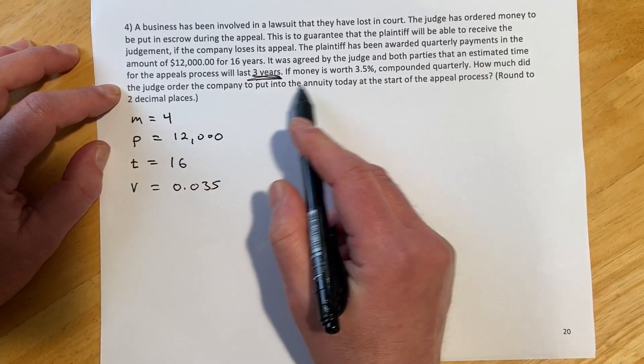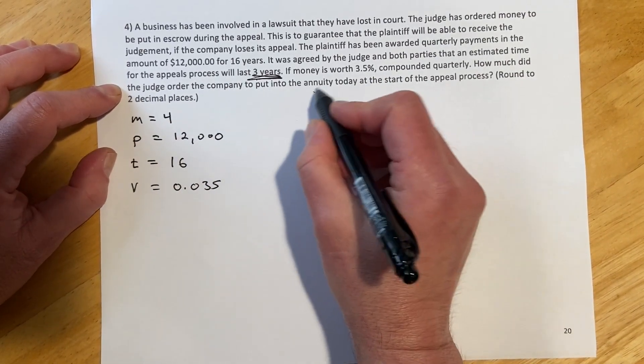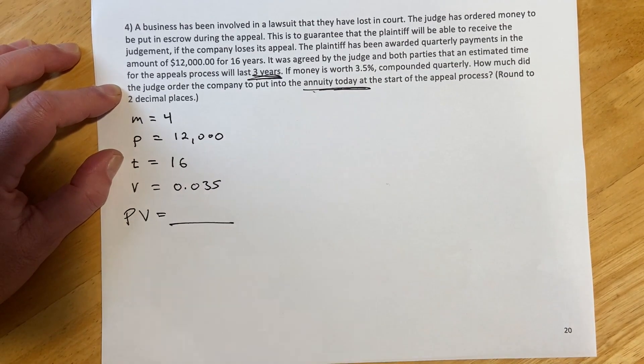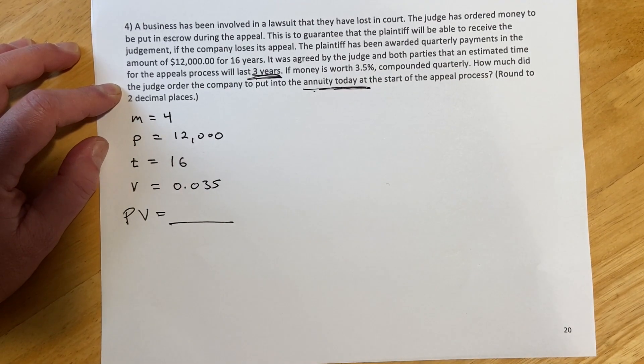How much did the judge order the company to put into the annuity today? So putting it in today would be a present value. So that's what we're looking for at the start of the appeals process.